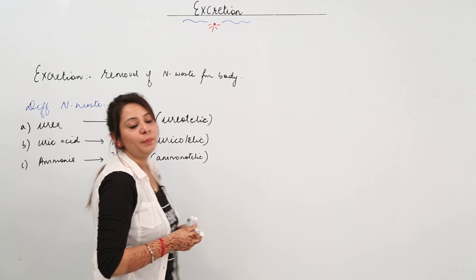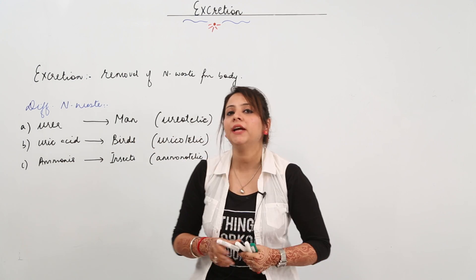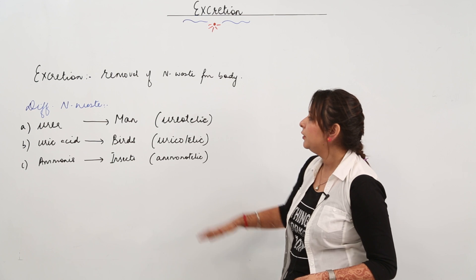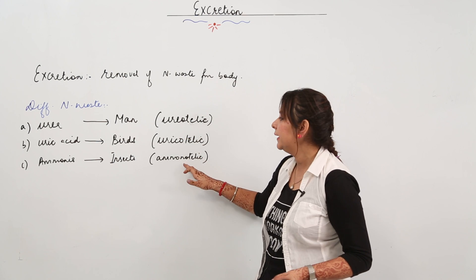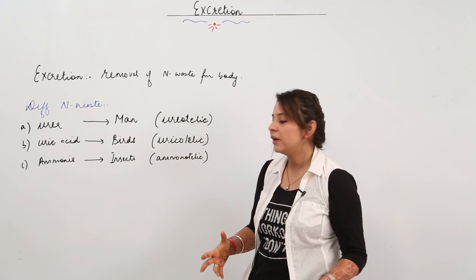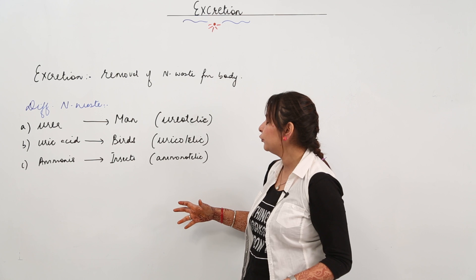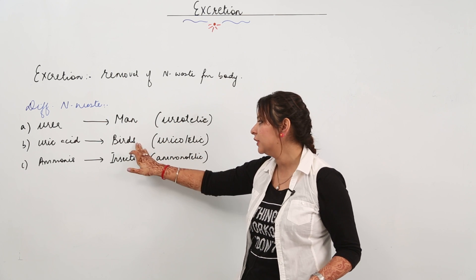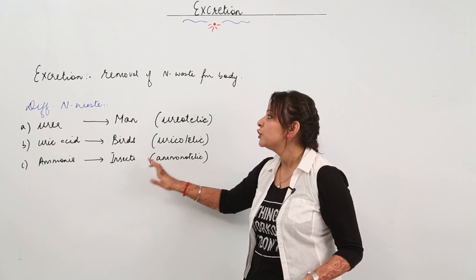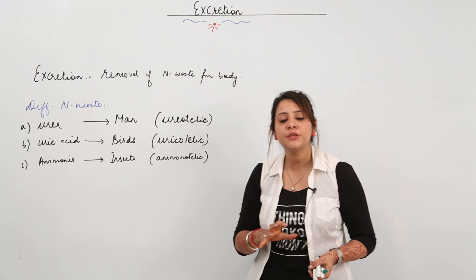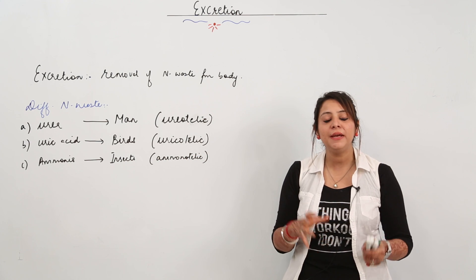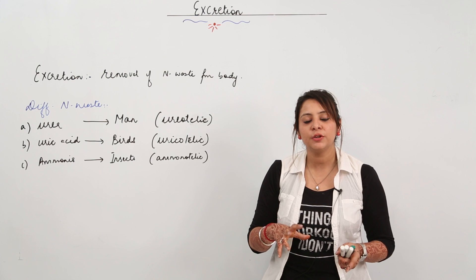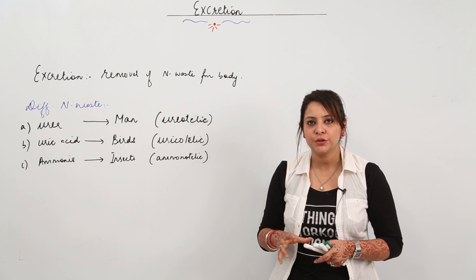So depending on what kind of nitrogenous waste they excrete mainly, organisms can be ureotelic, uricotelic, or ammonotelic. The examples are: ureotelic — humans; uricotelic — birds; ammonotelic — insects. The removal of nitrogenous waste from the body is called excretion.